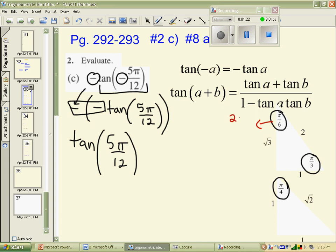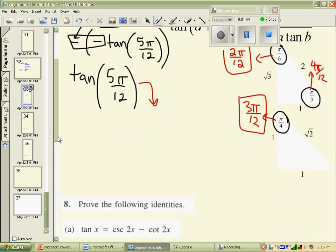π over 6 is, of course, 2π over 12. π over 3 would be 4π over 12. And π over 4 is 3 over 12. Quite obviously, if we took 2π over 12 and 3π over 12 and added them up, we would make 5π over 12. So I will rewrite my tangent 5π over 12 as the tangent of π over 6 and π over 4 added up.